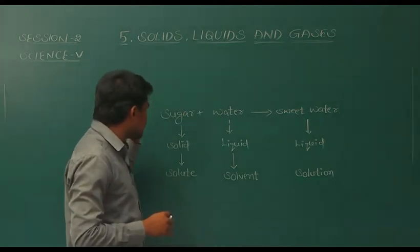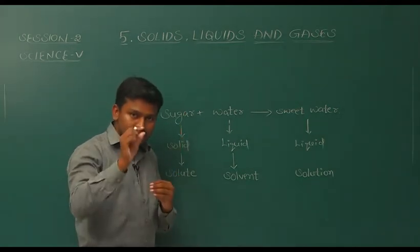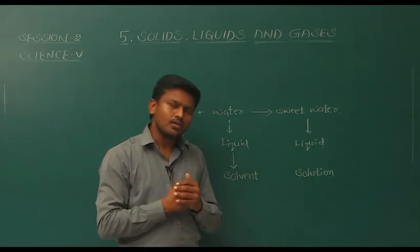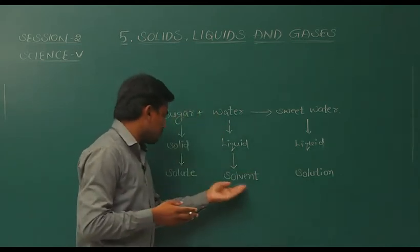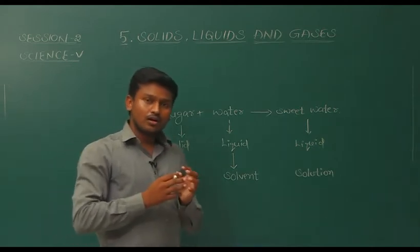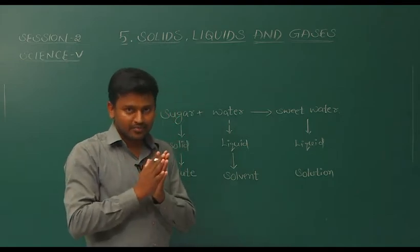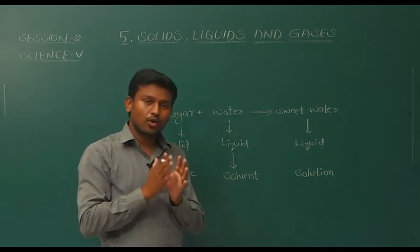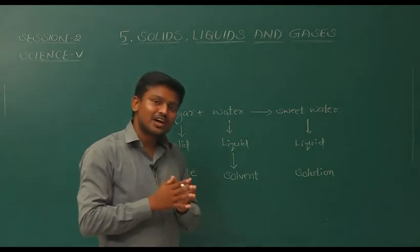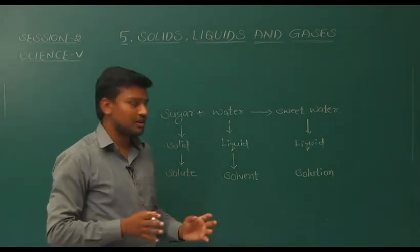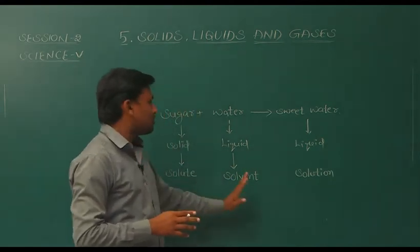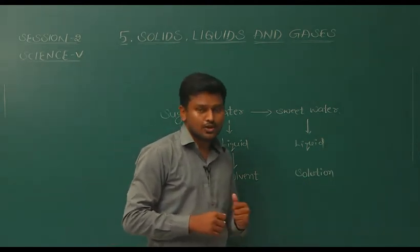Sugar is in less quantity, but water is in more quantity. We can also explain solvent and solute in terms of their quantity. The substance which is in less quantity in the solution is called the solute, and the substance in higher quantity is called the solvent. The combination of solute and solvent gives us the solution.